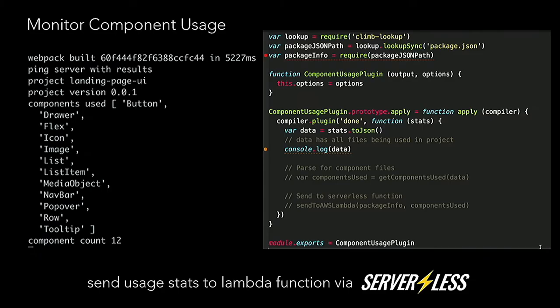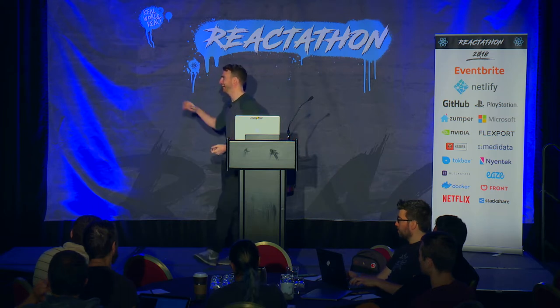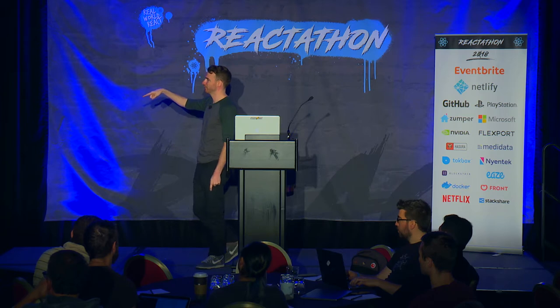The other thing we're doing is monitoring component usage. When you're making changes to a component's API, you want to know where it's actually being used. This is a super simple Webpack plugin — it parses through, sees what components are being used, and calls a Lambda function to report: hey, this app is using these components. So when we go to change the button or the table, we know which places are using it and can make sure our change doesn't break anything there.